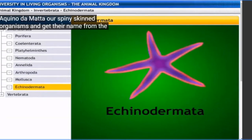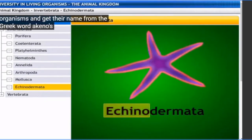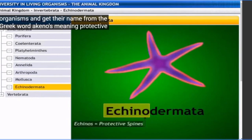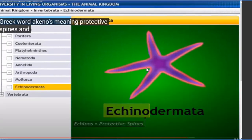Echinodermata are spiny-skinned organisms that get their name from the Greek word 'echinos' meaning protective spines. 'Dermata' comes from the Greek word meaning skin. The phylum Echinodermata includes starfish, sea cucumbers, and sea urchins. Echinoderms are exclusively free-living and marine animals - found in marine conditions, not in fresh water.